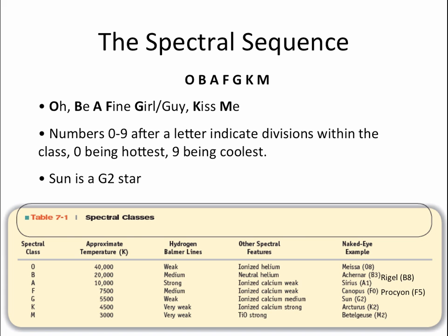The spectral sequence we use today — simplified and rearranged by Annie Jump Cannon — is O, B, A, F, G, K, M. One way astronomers remember that is 'O, be a fine girl, kiss me' or 'O, be a fine guy, kiss me.' Within each letter there's a range of temperatures, so we've added a number after the letter to indicate subdivisions, with 0 being the hottest and 9 being the coolest. The sun is a G2 star — it fits into the G classification, in the middle of the spectral sequence, and the 2 means it's toward the hotter end of all the G stars.